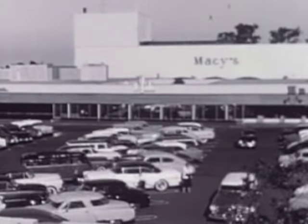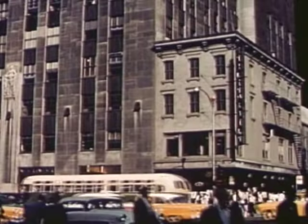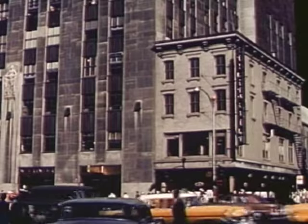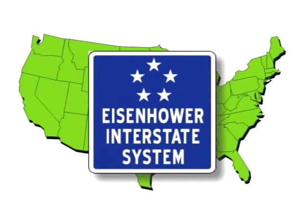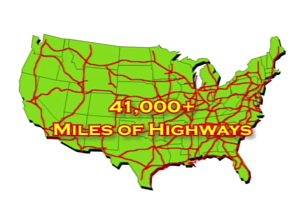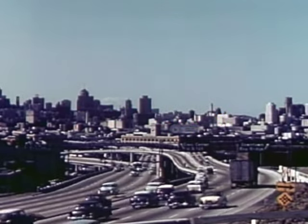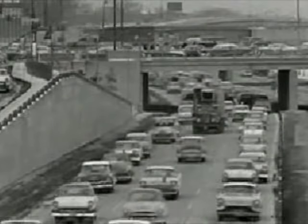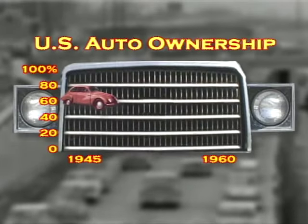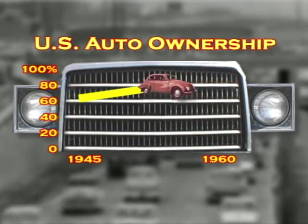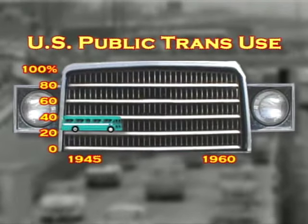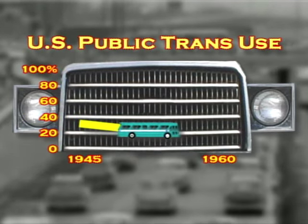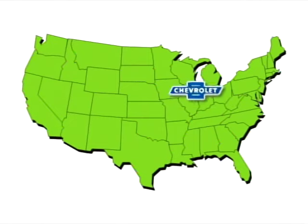The growth of suburbia increased the need for personal transportation. Many cities had buses and trains, but the country did not have the roads needed to connect cities and suburbs. President Dwight Eisenhower signed the Federal Aid Highway Act of 1956, calling for more than 41,000 miles of interstate highways at a cost of more than $25 billion — the biggest public works project in American history. In 1945, only two out of three American households had a car. By 1960, nine out of ten had one. As personal transportation grew, public transportation shrank. In 1945, 35% of the U.S. used public transportation regularly. By 1960, only 7% used it.